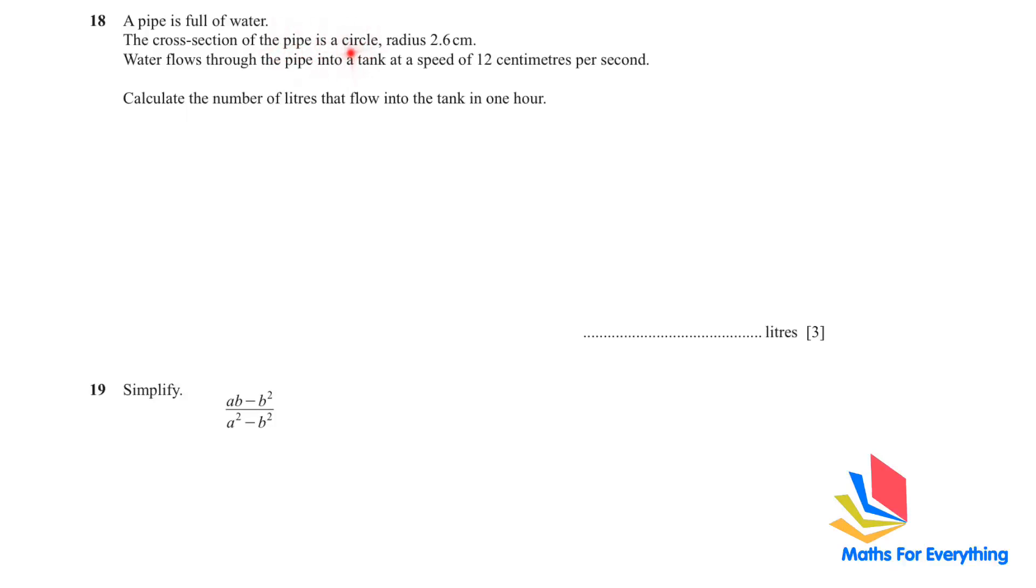First, the cross section is a circle, so you need to know how to find the area of the circle. Water flow gives you the volume. Water flow rate equals area of the cross section multiplied by speed of water. So water flow equals pi R squared multiplied by the speed of water, which is 12 cm per second. We want to find for 1 hour, so we multiply by 60 multiplied by 60 to change it into hours.